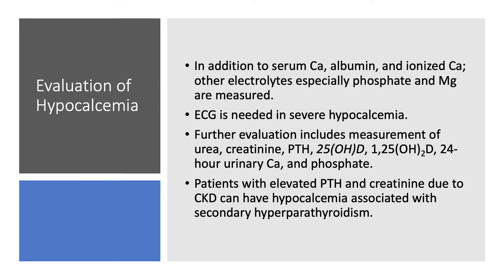How do we evaluate for hypocalcemia? The diagnosis is easy — on any basic metabolic panel, you have calcium, which you can verify with ionized calcium. Look at albumin so you can correct for hypo- or hyperalbuminemia, or better yet, get ionized calcium directly. You need to get magnesium and phosphate. If you have severe hypocalcemia, get an EKG and monitor the patient on telemetry during replacement.